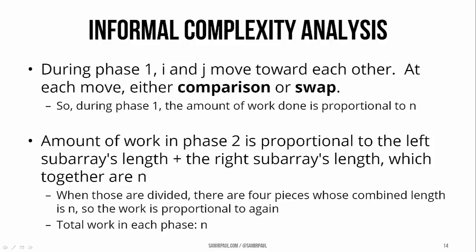After we do our first subdivision and we enter phase 2, the work that we're doing in that phase is proportional to the left subarray's length plus the right subarray's length, which we know together equal n. And when we divide them again for phase 3, well now we end up with our total number of elements divided into 4 chunks, all of which also add up to n. So during every phase, we're still doing work proportional to n, the number of elements in the array. That's for each phase.